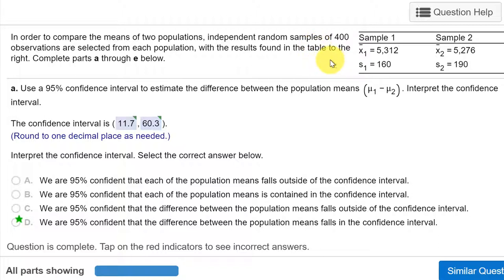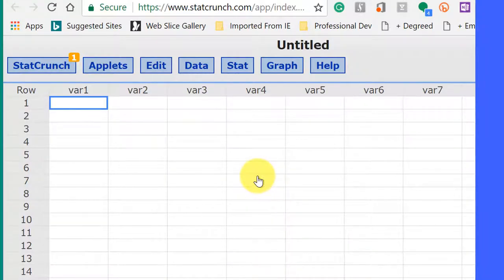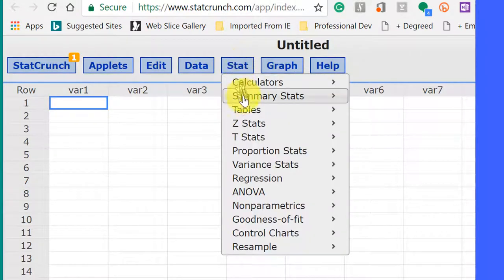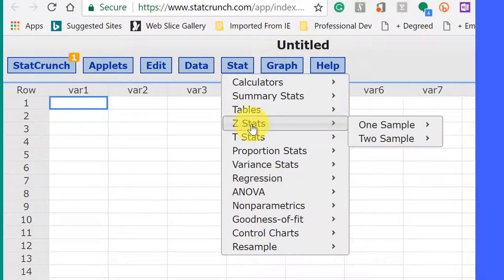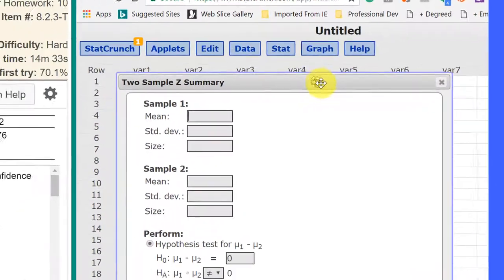Okay, we're going to do this using StatCrunch. Remember you can go to question help and then open up StatCrunch. I already have StatCrunch open over here to save a little bit of time. And what we need to do here is go to Stat, zStats, because we're using zStats. We have two samples with summary and we bring up the dialog box.